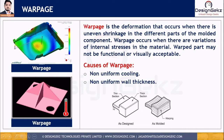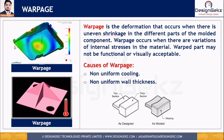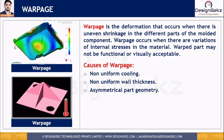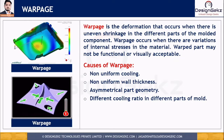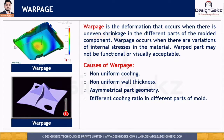Where the thickness is higher and where the thickness is low, there will definitely be a temperature difference during solidification, and that leads to warpage of the part. Asymmetrical part geometry is also one cause that leads to warpage, and different cooling ratios in different parts of the mold cause the plastic to cool differently, creating internal stresses.